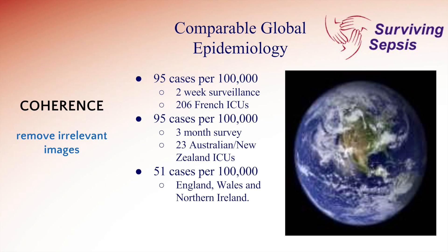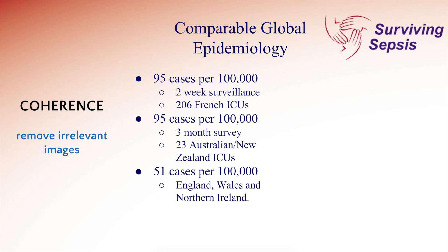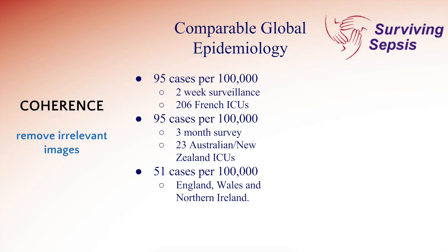The coherence principle says to remove irrelevant images. This picture of the globe really adds nothing — yes, it's talking about global epidemiology, but it doesn't add anything more. So let's remove that. Now you remove irrelevant images, but it's important to put in relevant images. I took a map where I highlighted the countries we're looking at: France, the United Kingdom, and Australia and New Zealand. No clip art — because clip art is always irrelevant — but do put in relevant images.